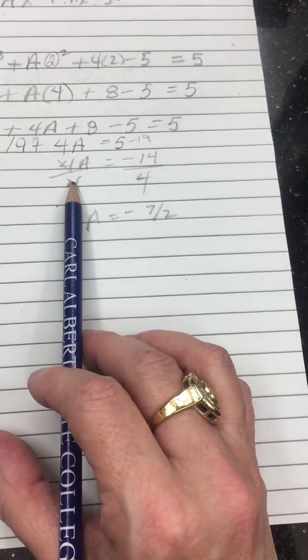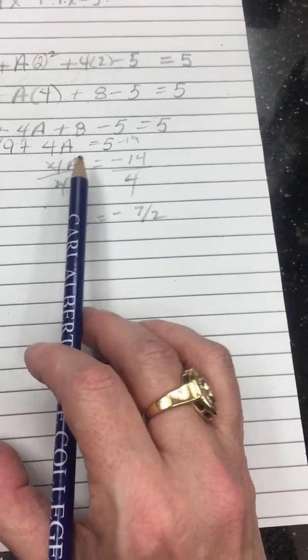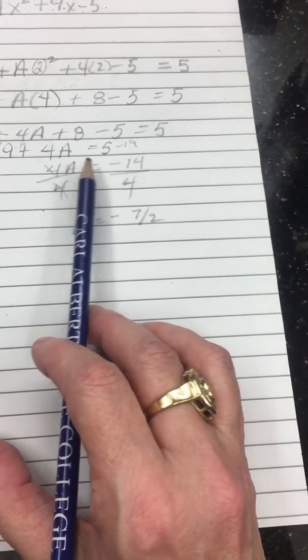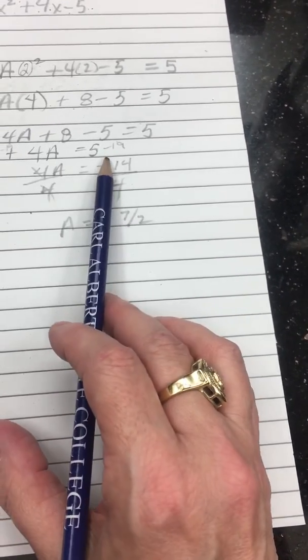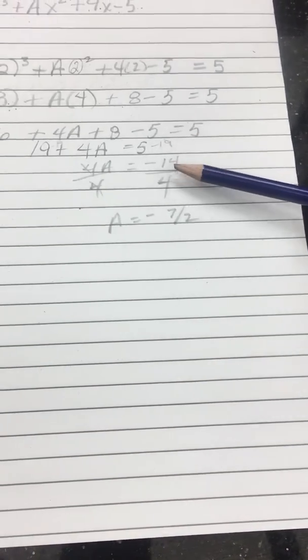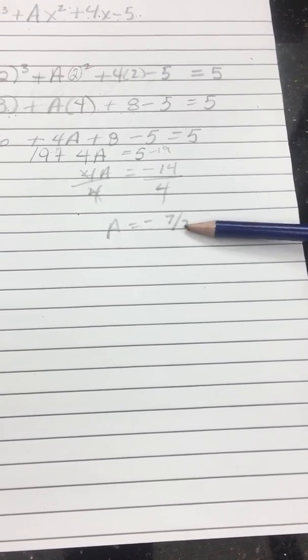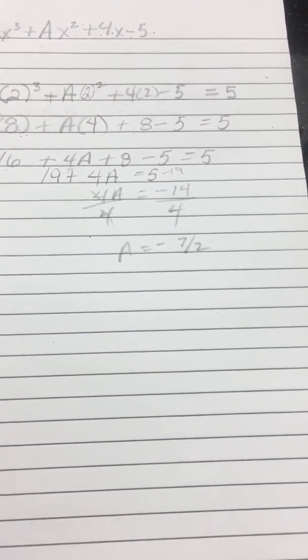Divide both sides by 4, creating just 1A is equal to, and notice you still got a negative here. So 14 over 4 will reduce down to 7 over 2 is equal to A.